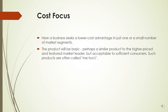Next is cost focus. In cost focus, a firm seeks a cost advantage in its target market segment. A business seeks a lower cost advantage in just one or a smaller number of market segments. It concentrates its efforts on one or more products or markets. The product will be basic — perhaps a similar product to the higher-priced market leader, but acceptable to sufficient consumers. Such products are often called 'me-toos' — substitutes available to the higher versions or more costly versions of things.